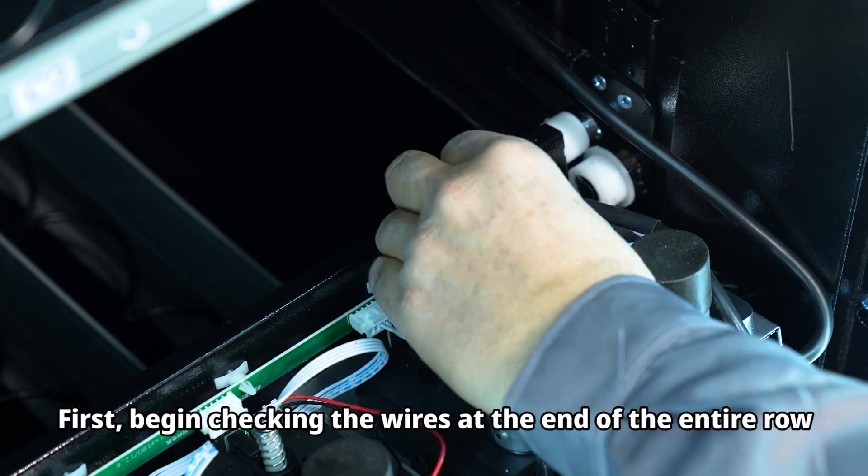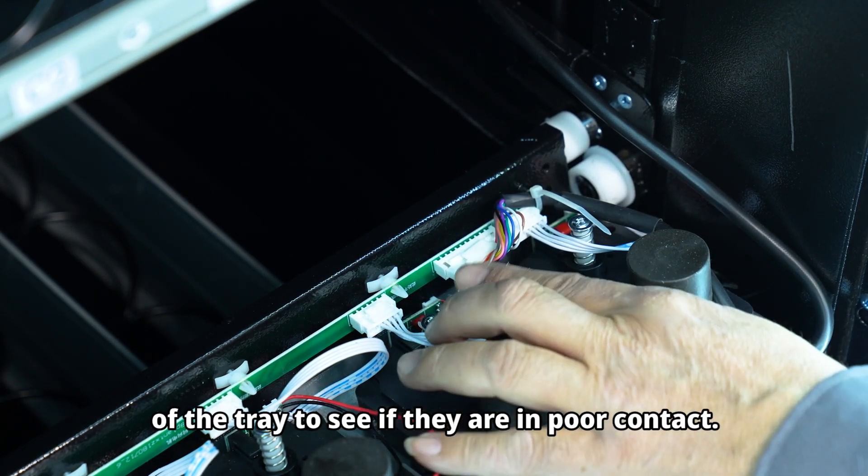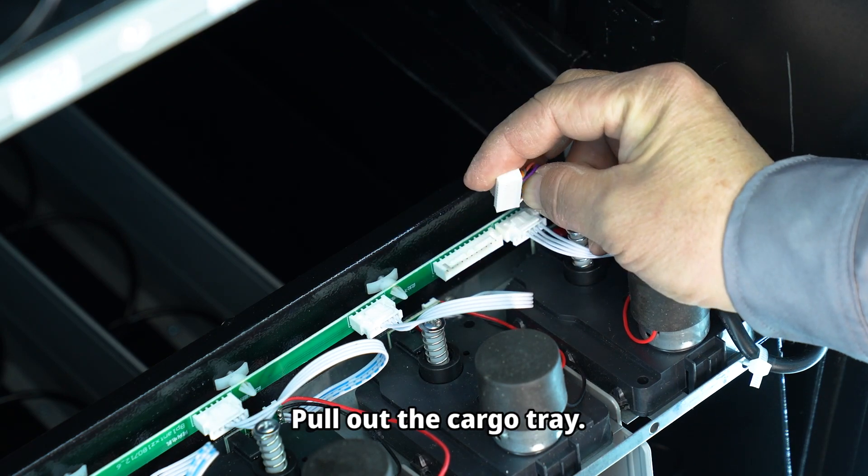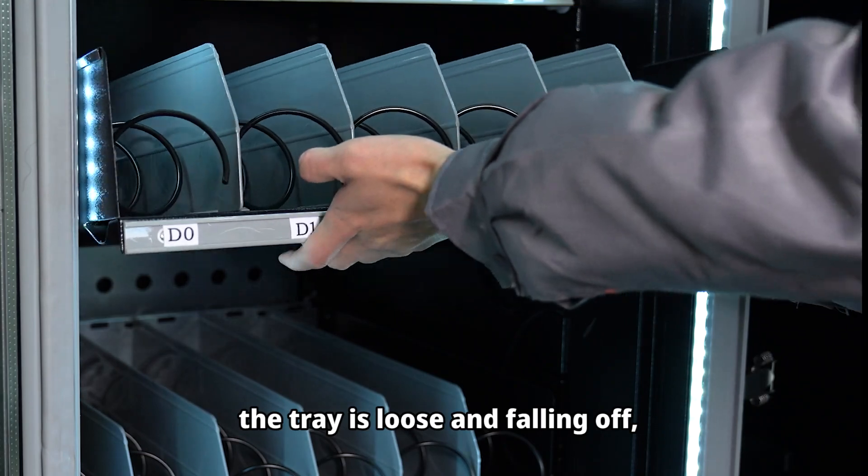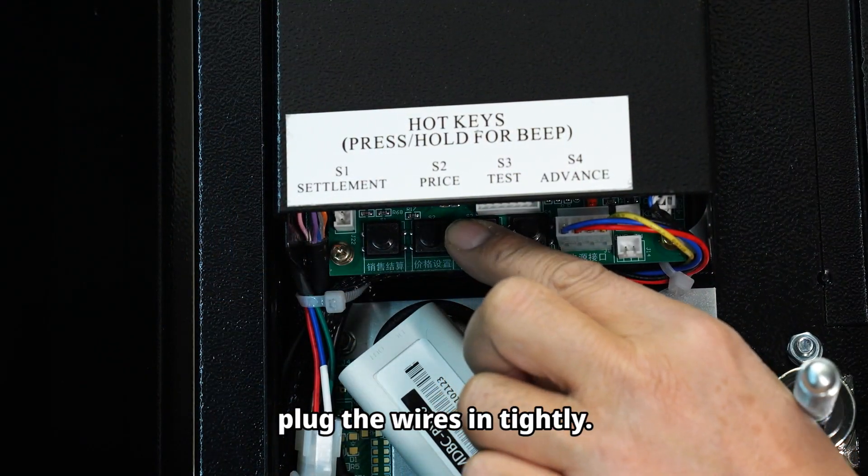Pull out the cargo tray. If the black wire at the end of the tray is loose and falling off, plug the wires in tightly.